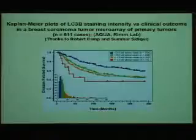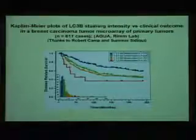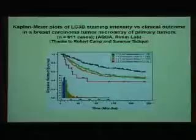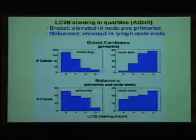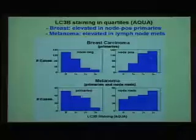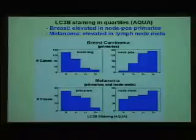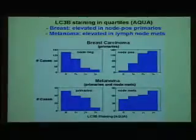High LC3B staining was linked to poor clinical outcome in these breast carcinoma cases. This diagram shows that the majority of breast carcinomas with negative lymph nodes stained very low for LC3B, whereas breast carcinomas with positive lymph nodes showed a high percentage staining 2 and 3 plus for the anti-LC3B marker. A similar trend was noticed, although not as dramatic, with primary and metastatic melanomas.